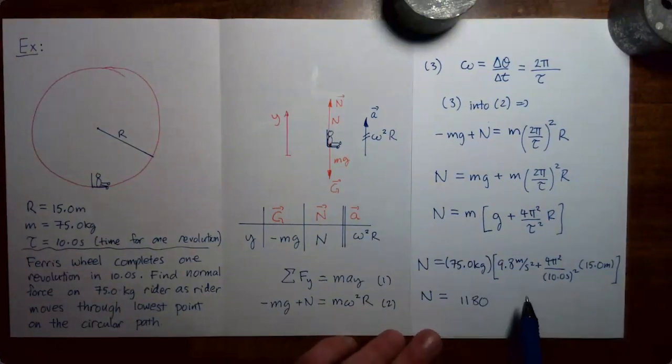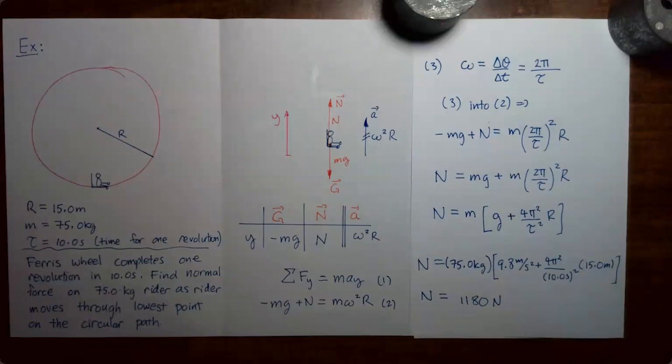When I put all of this into my calculator, I get 1180. Now as far as the unit, notice that both of the terms inside the brackets have units of meters per second squared. Then we have meters per second squared multiplied by kilograms, which is a newton. So the normal force is 1180 newtons.